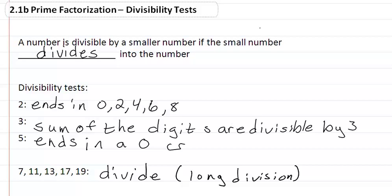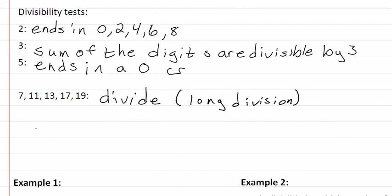Now for example for 3, if we have a number say like 57, if we add up the digits 5 plus 7, we get 12. 12 is divisible by 3, so 57 is divisible by 3.